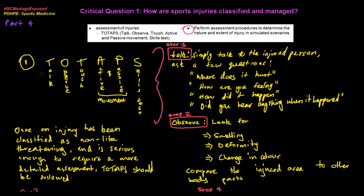Toe taps: we've got TALK, Observe, Touch, Active and Passive Movement, as well as Skills Test. The first component is TALK. It's just as simple as it sounds. When any type of injury occurs, the first thing you should do is TALK. You should ask the athlete a few questions, like where does it hurt, how did that happen, did you hear anything when it happened, like a pop or a tear.